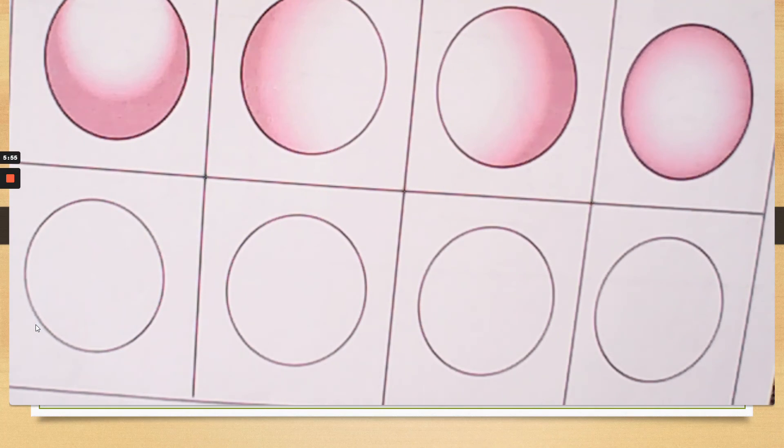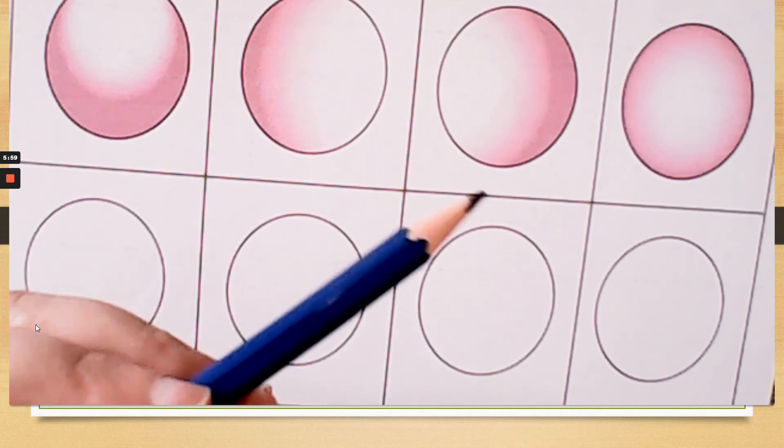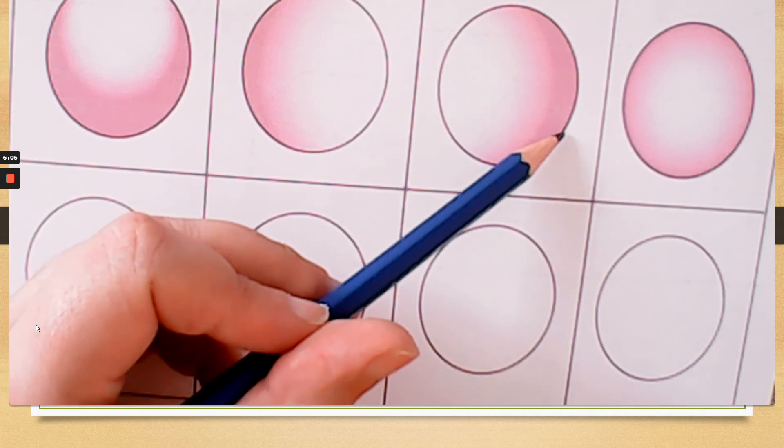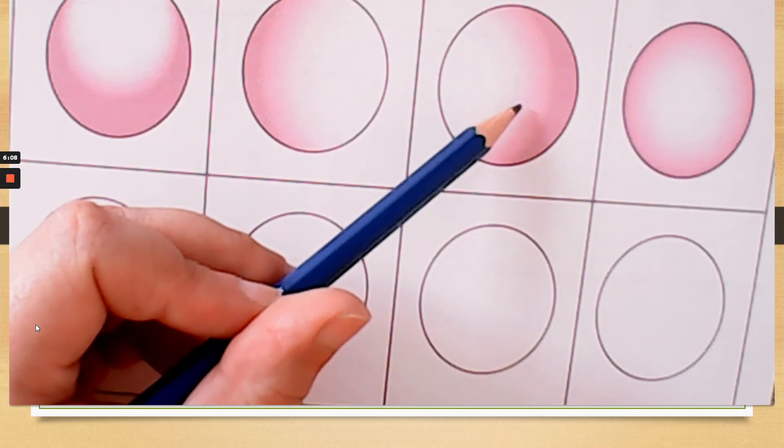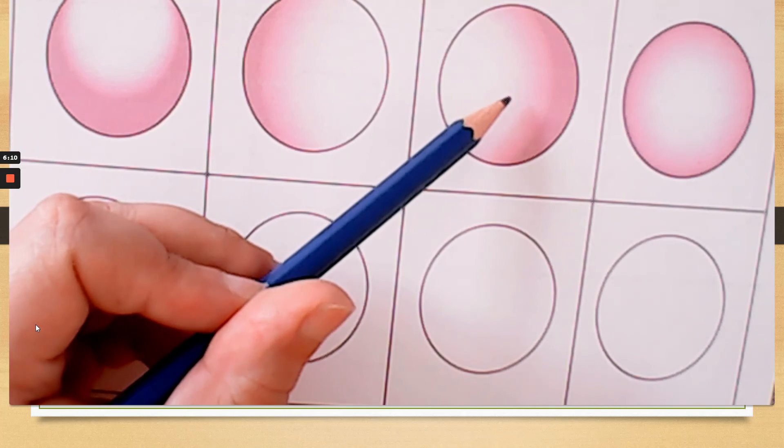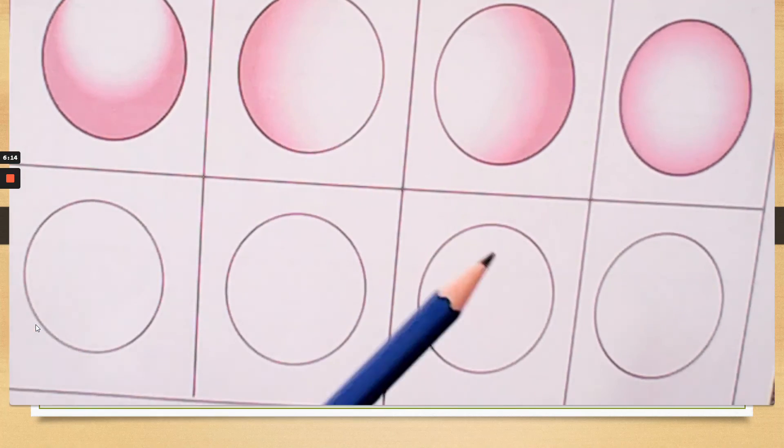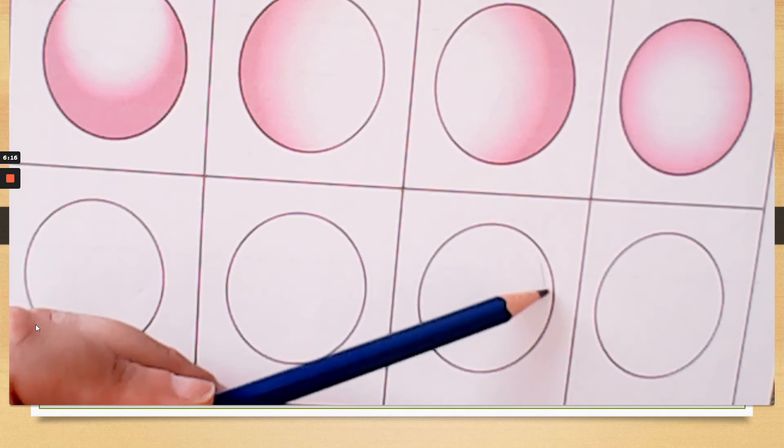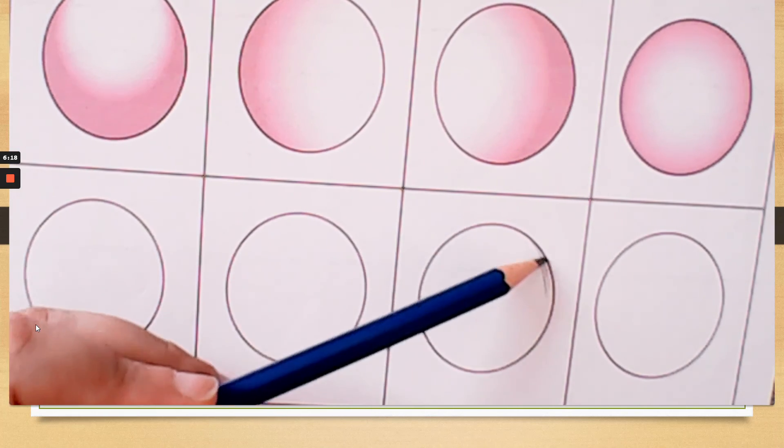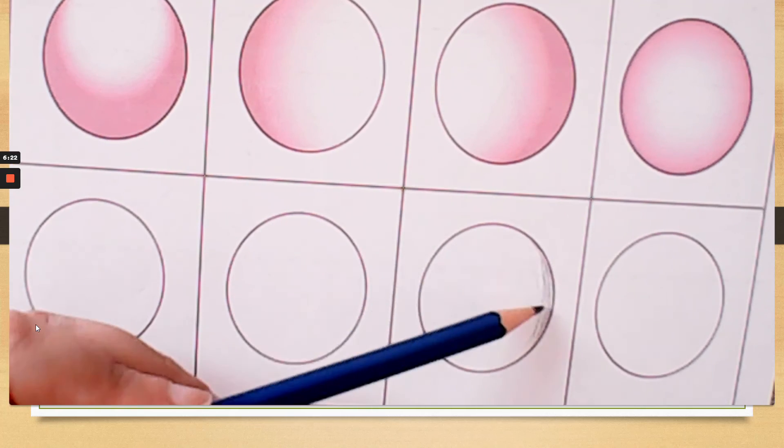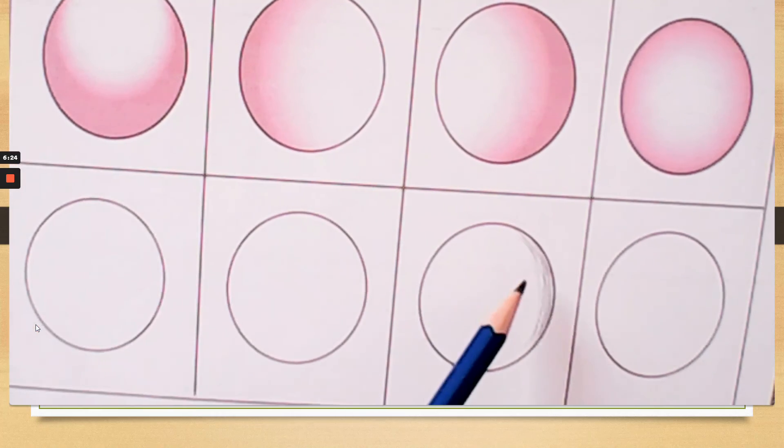Alright, so I am going to start showing you this one. So we can see we have a dark section, the medium section and the light section. So even when you're doing the dark section, we start off with very light, smooth, gentle markings.